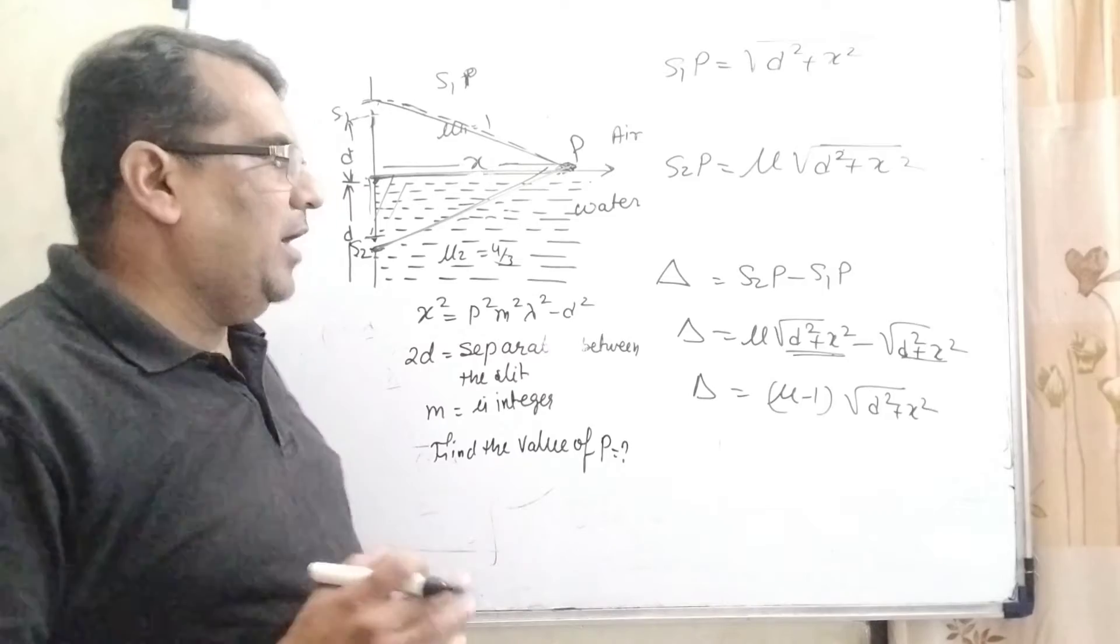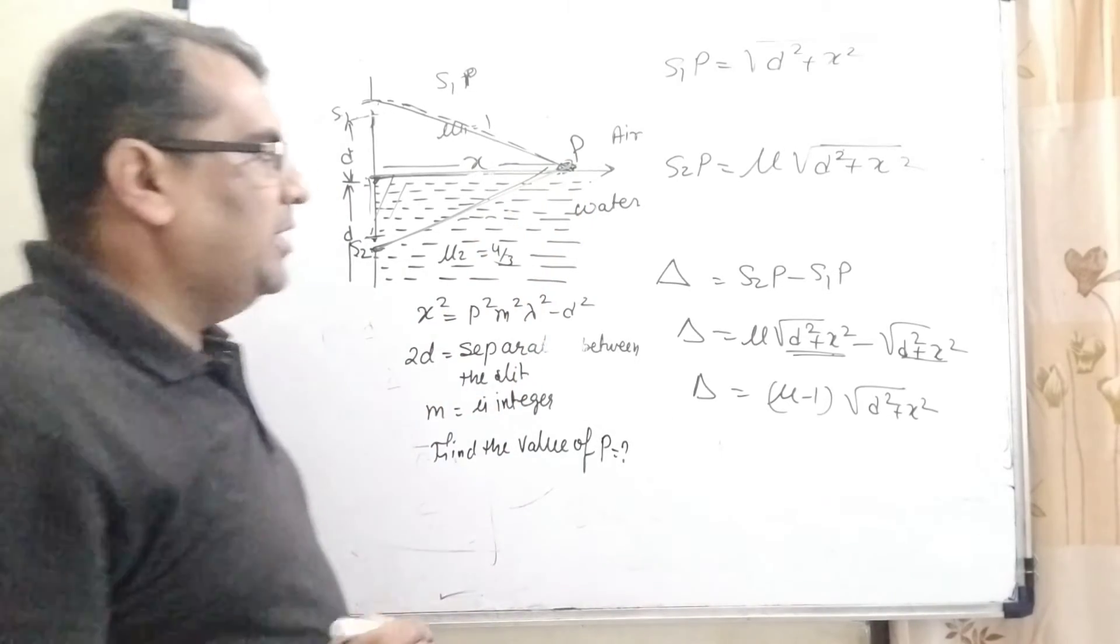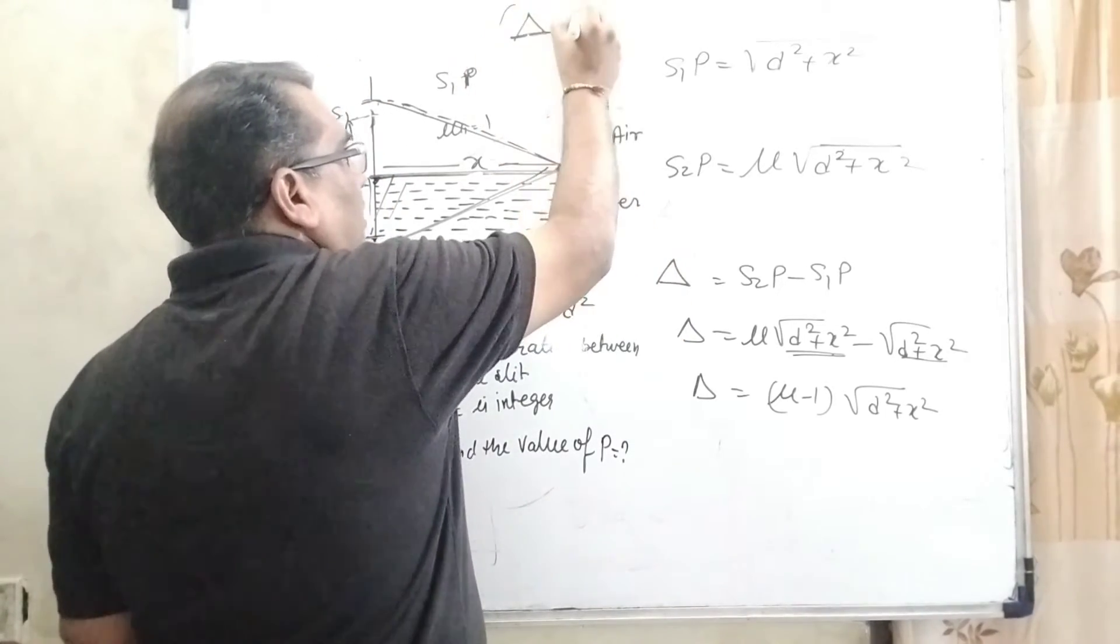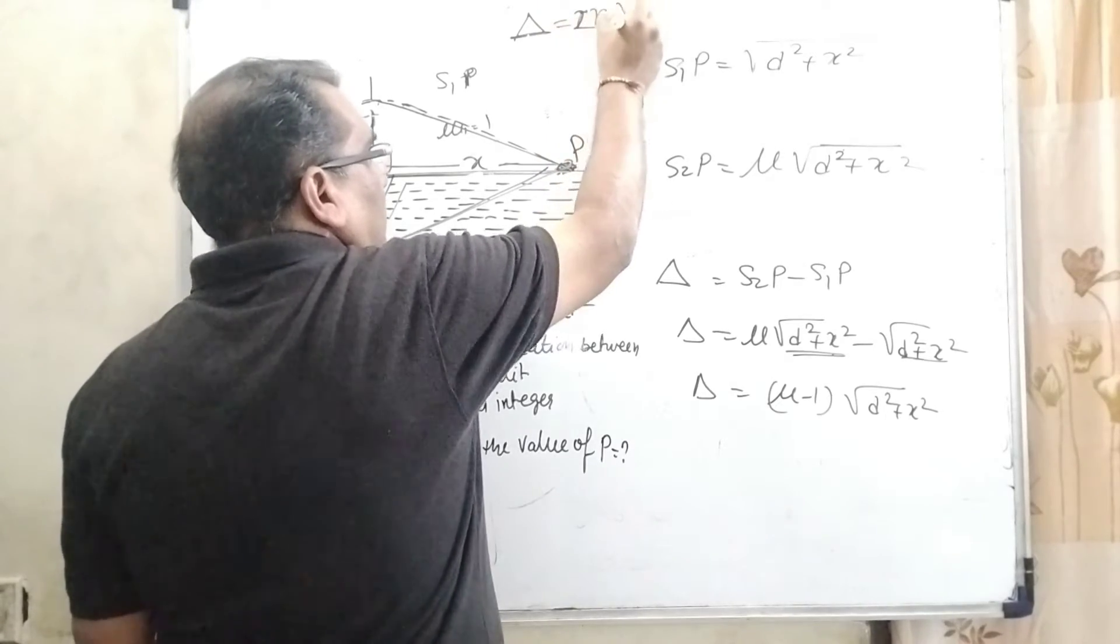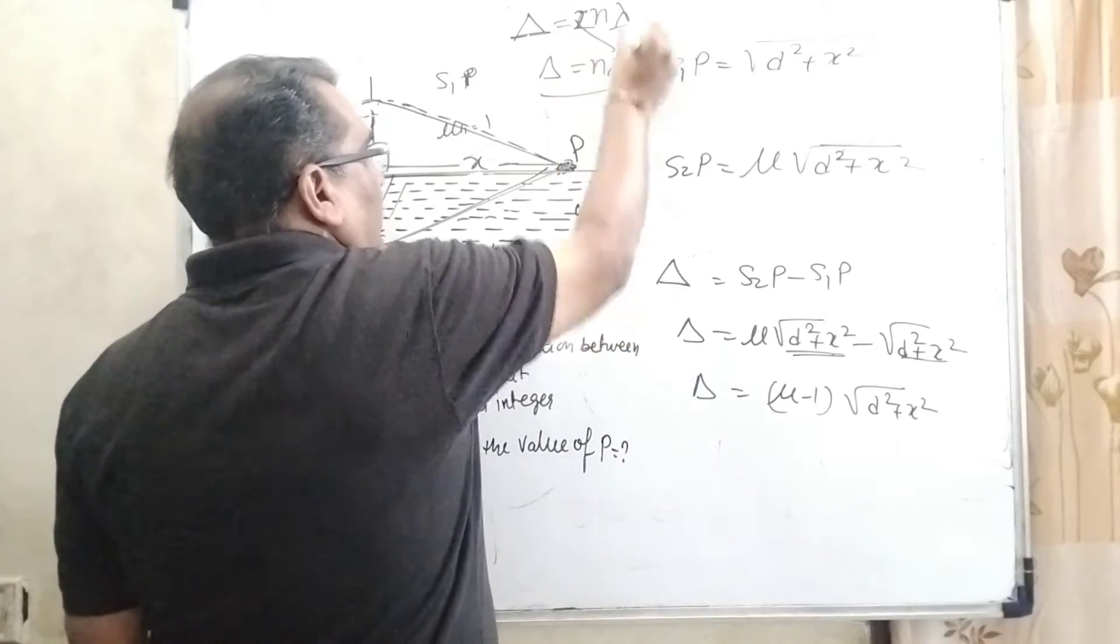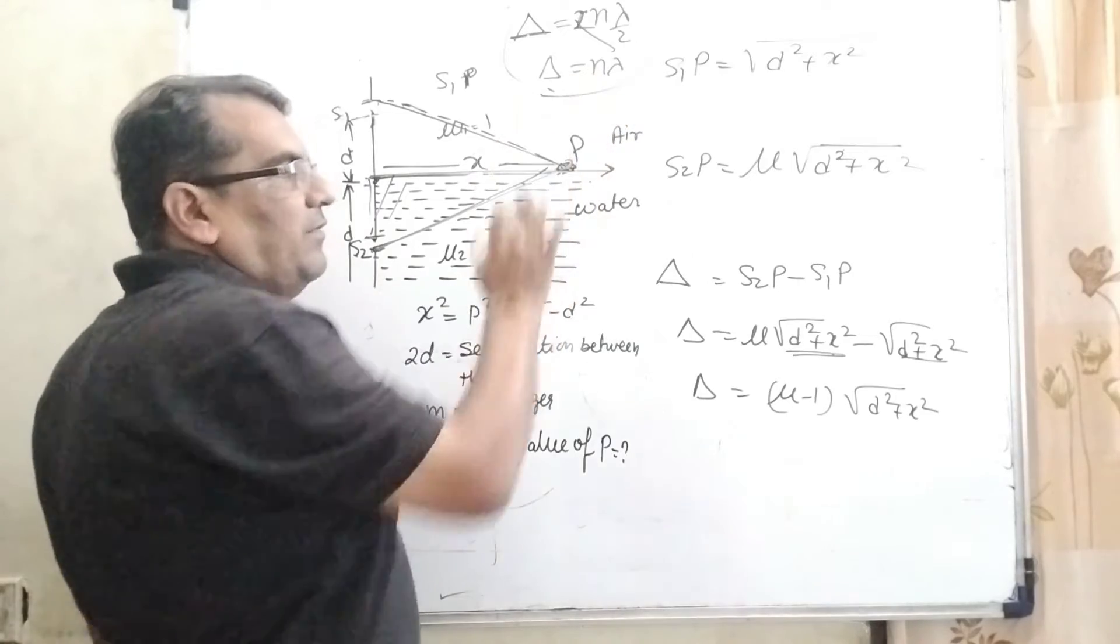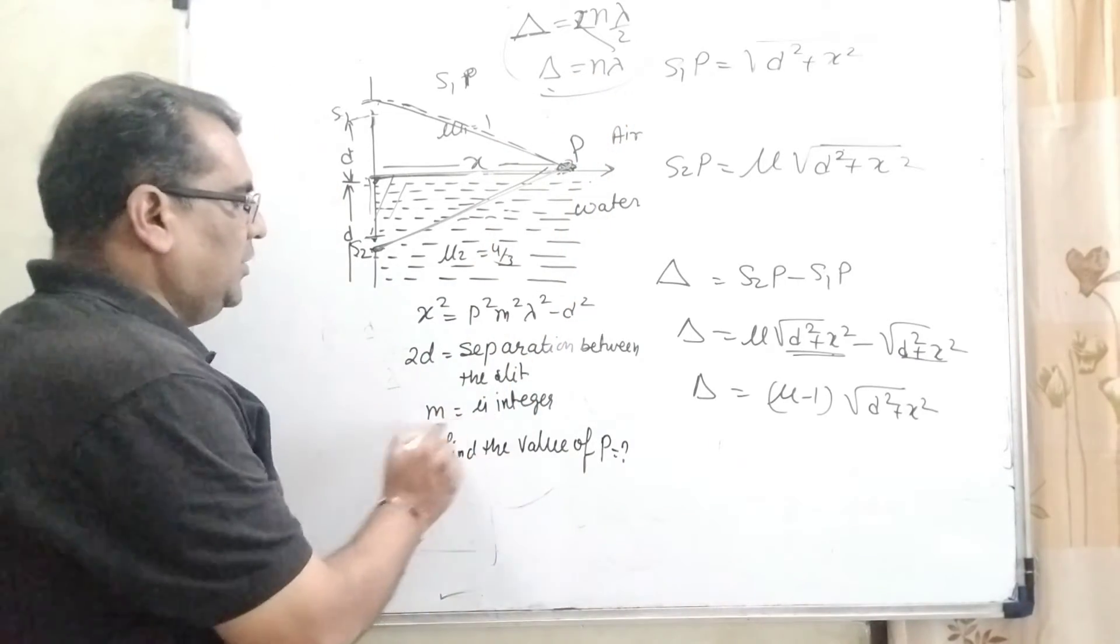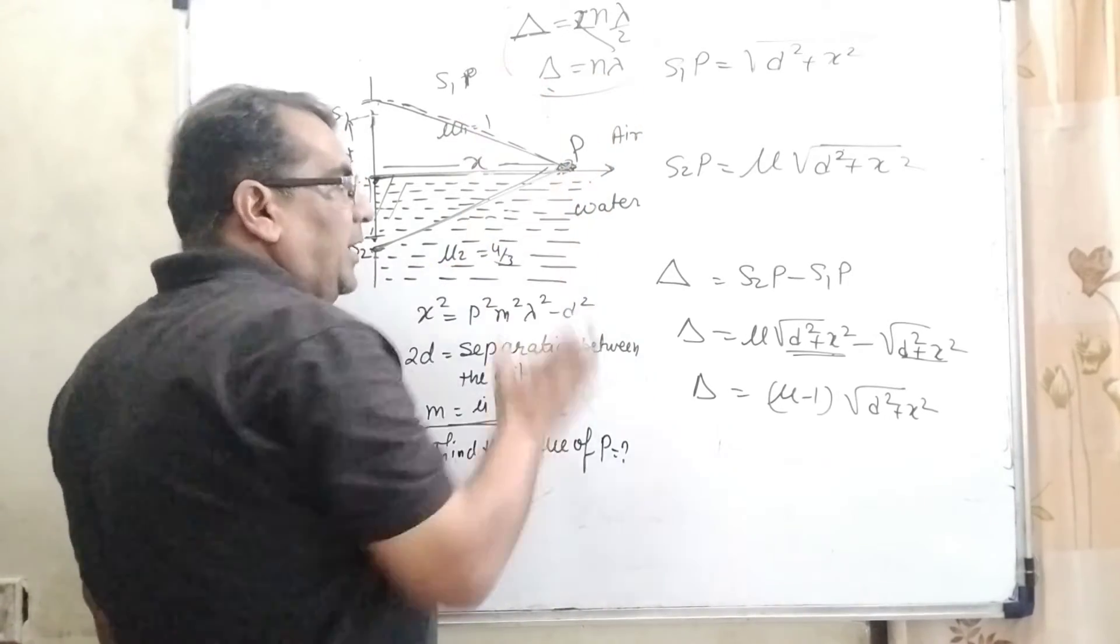Now in the question, we need to find the condition for maxima. What is the condition of maxima? When path difference is an even multiple of λ/2, meaning 2nλ/2 = nλ. But there's a restriction: in the question we're given m instead of n, because m is the integer given in the question. So we use mλ.